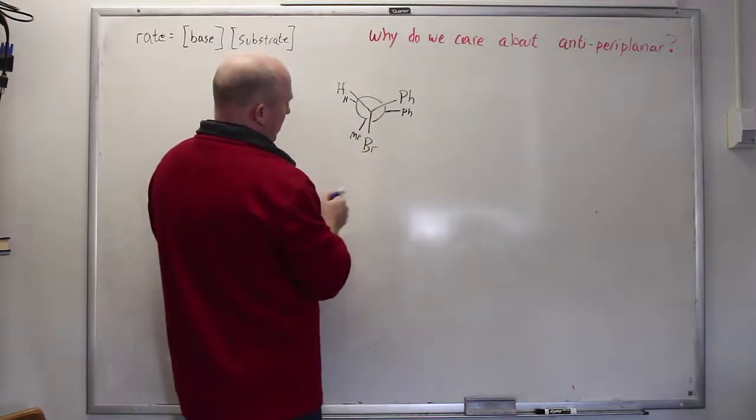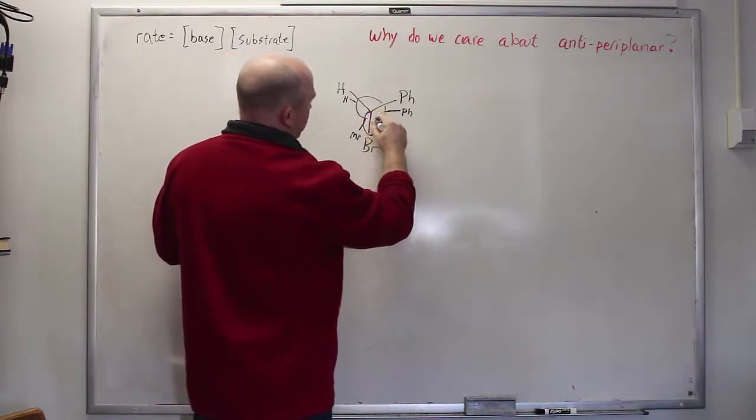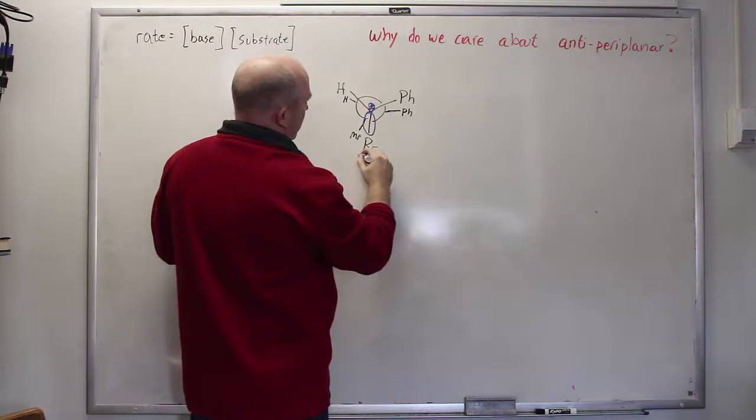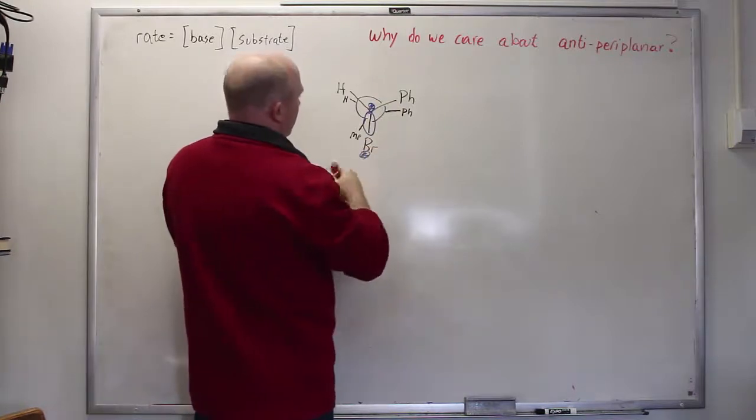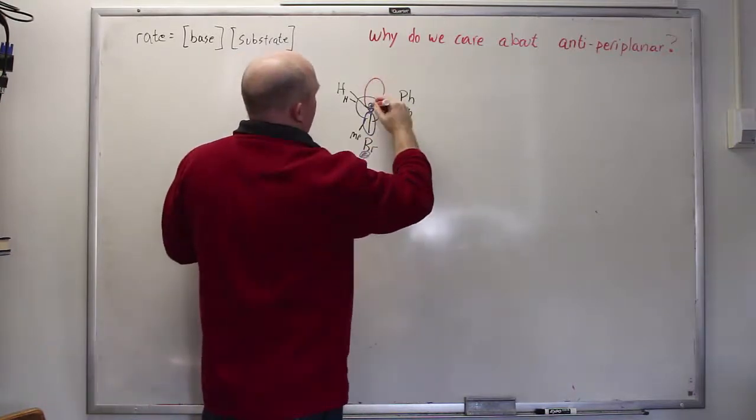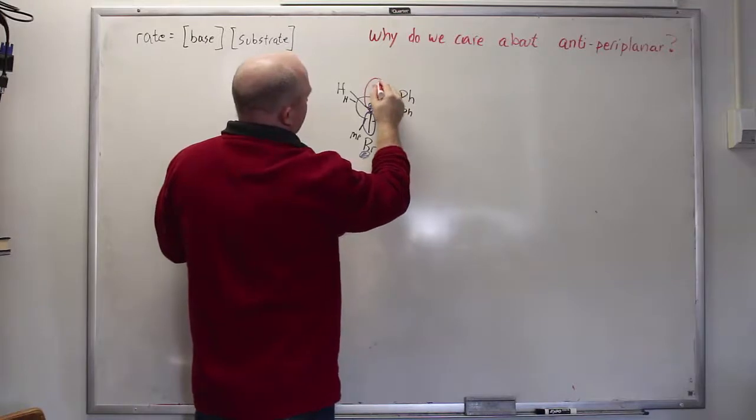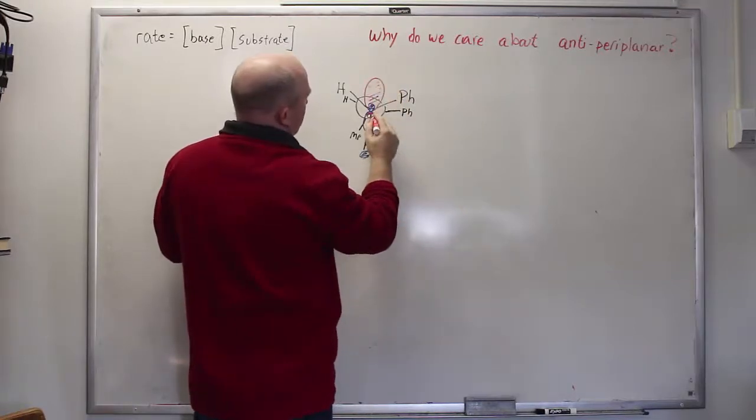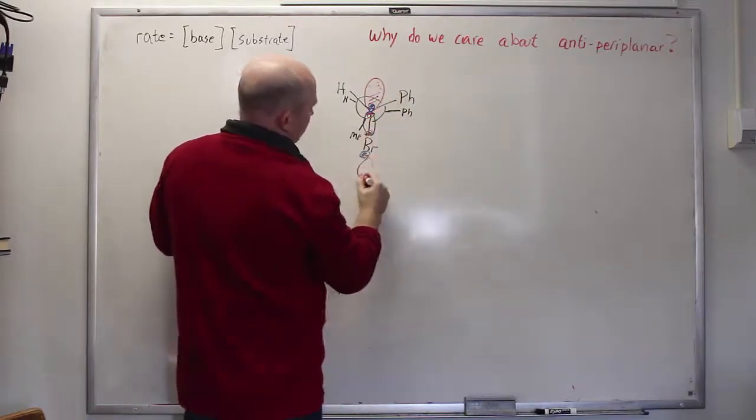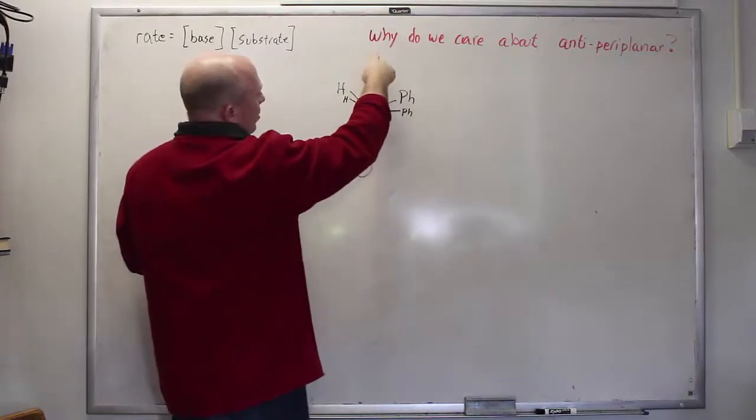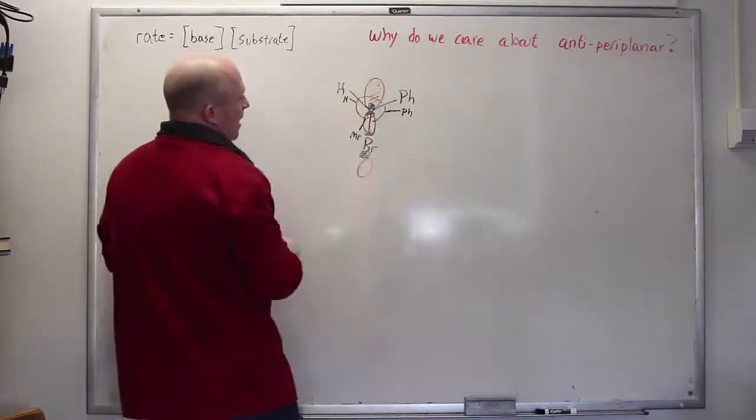The carbon bromine bond currently has a sigma orbital that sits right here, but it also has a sigma star orbital and that's the one that needs to have electron density into it in order to break the bond eventually. So there's the sigma star orbital and you will notice that the large lobe for the sigma star orbital is in the back.